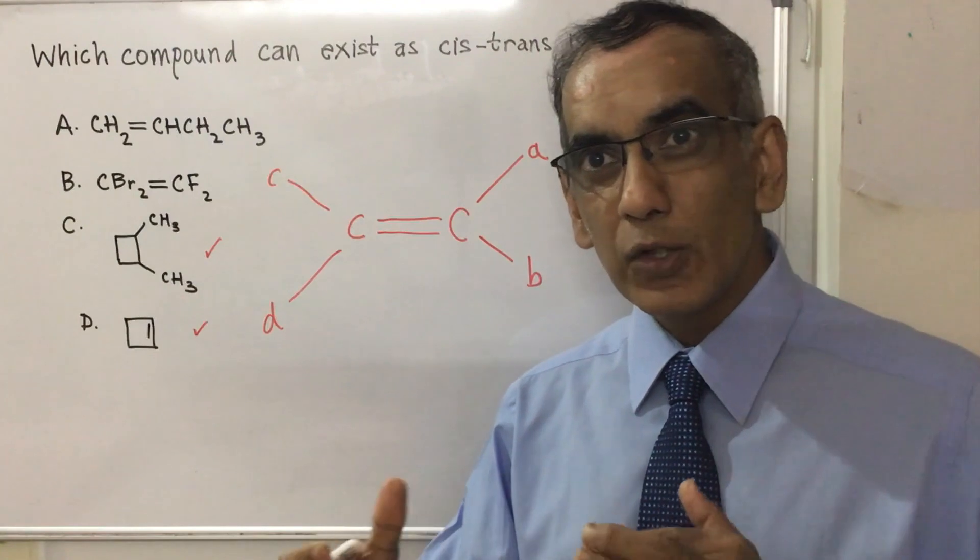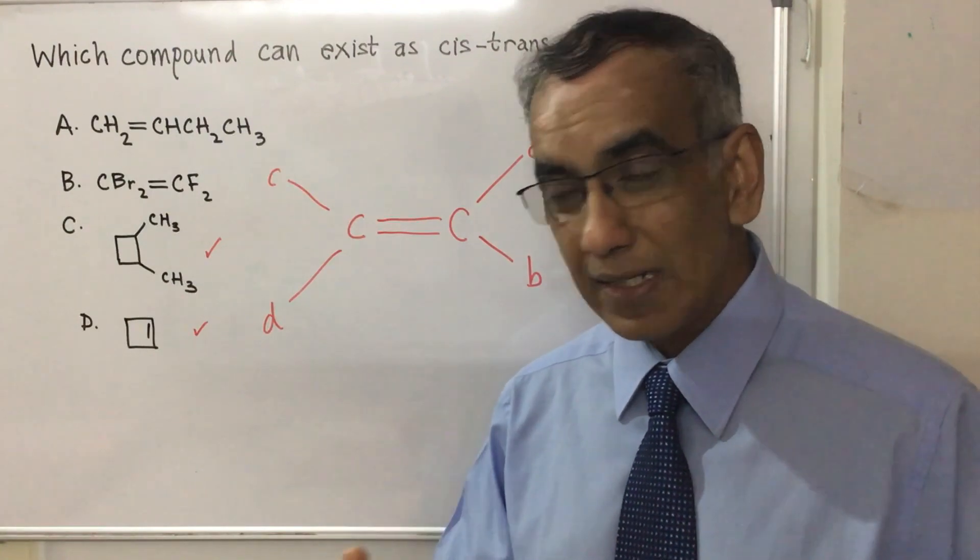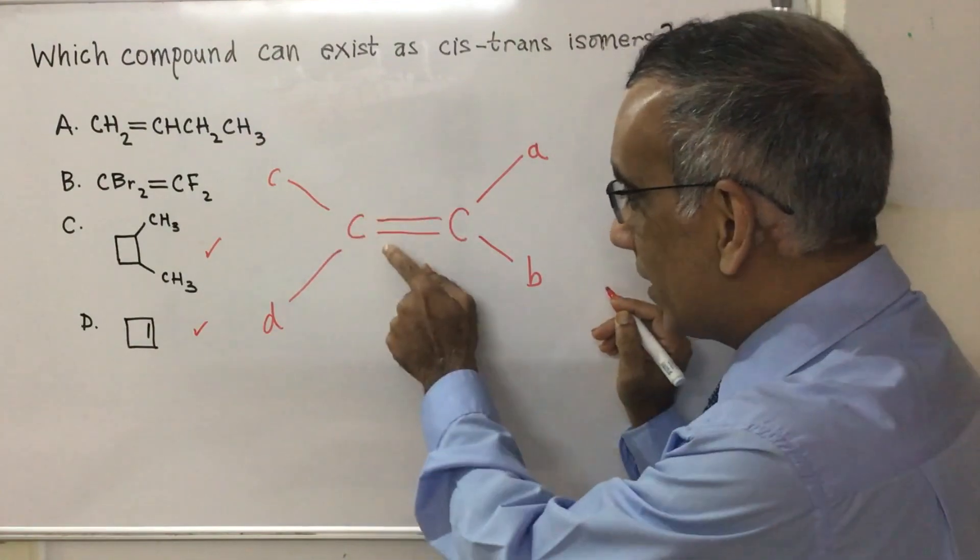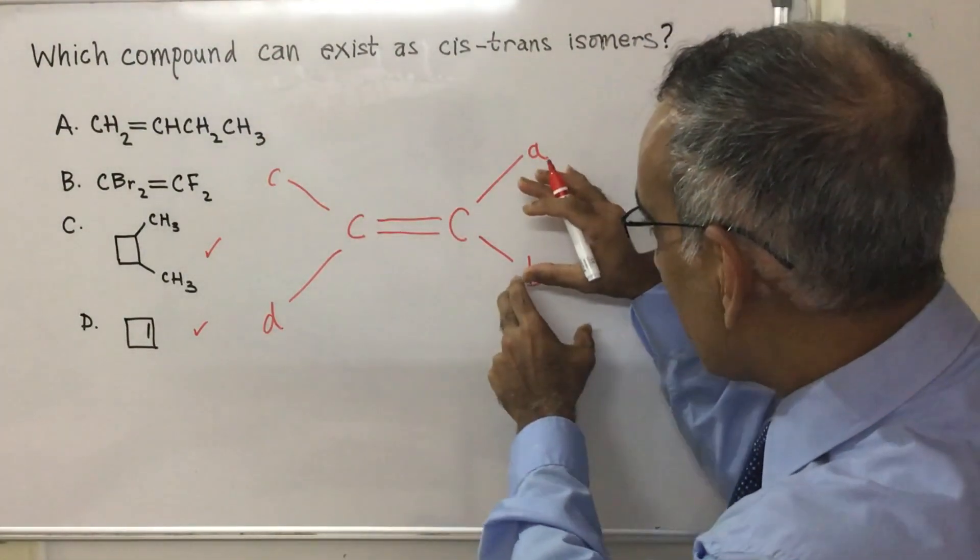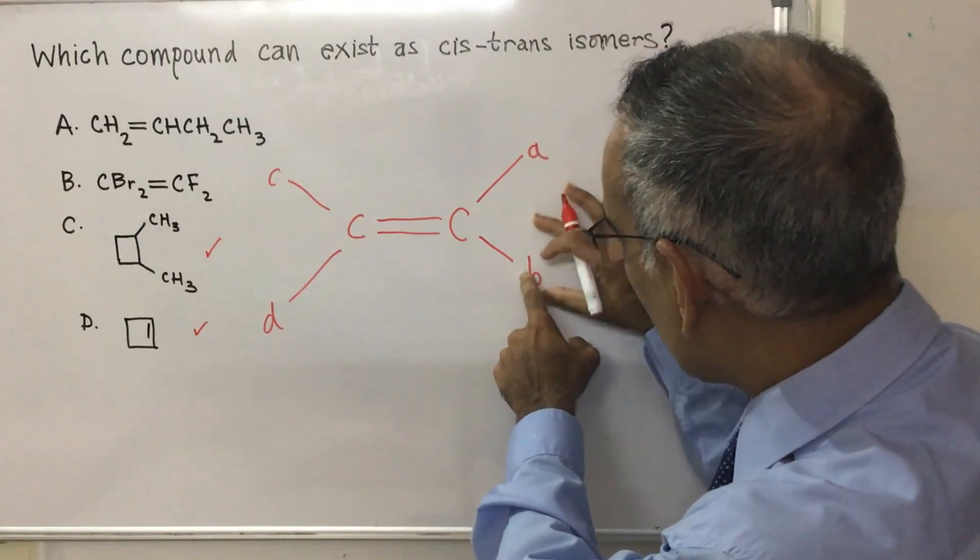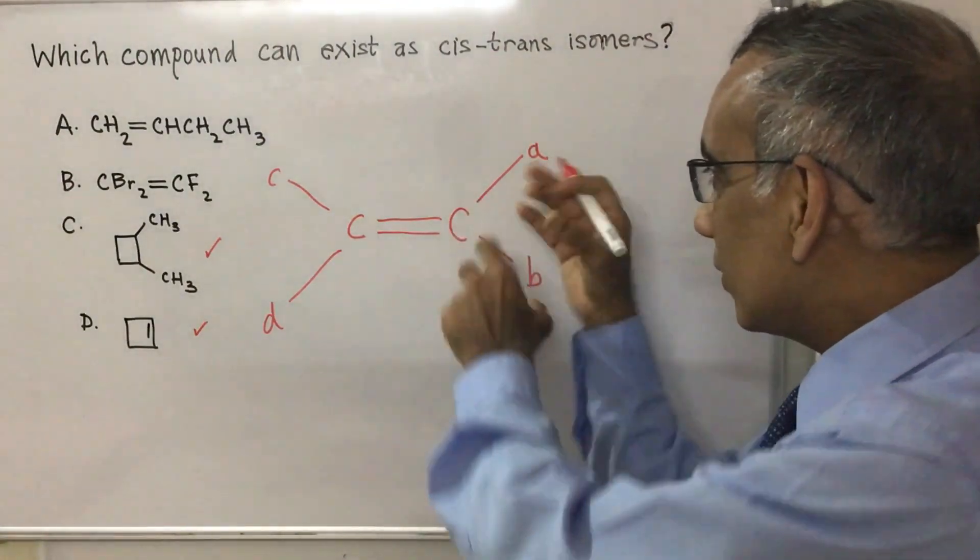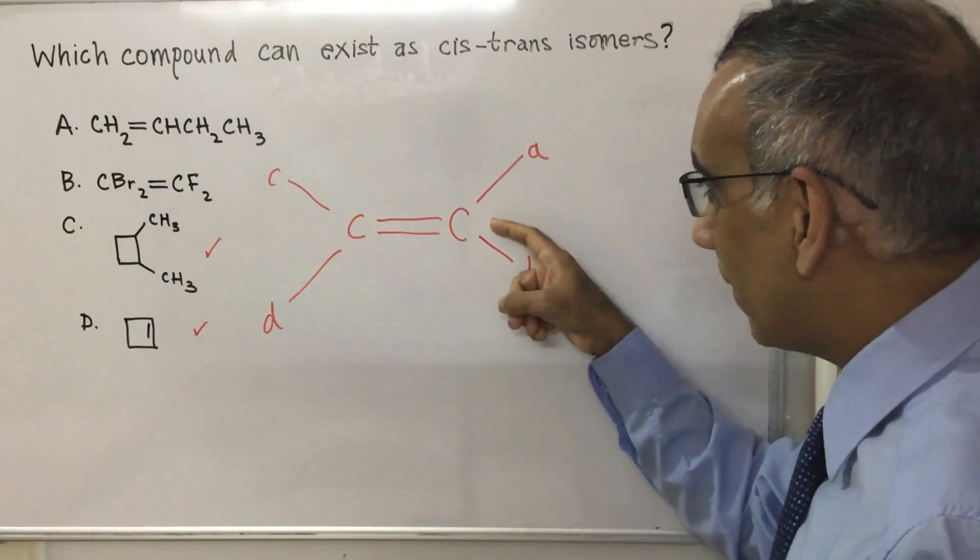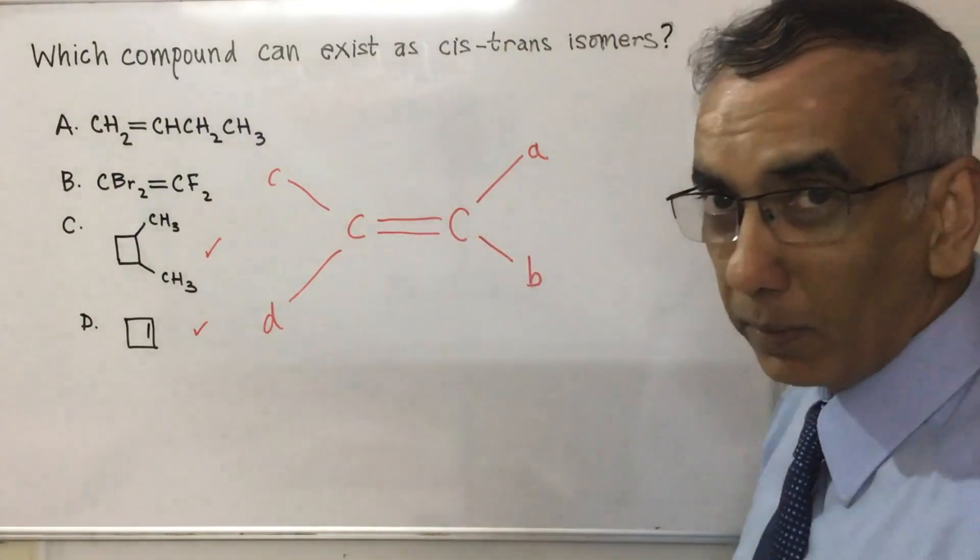Because what makes these two possible isomers exist is this area here, is this double bond in this case, which makes it impossible for these two structures here to move. It makes it impossible for there to be rotation about this carbon because of the double bond system.